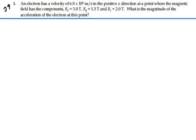Here's problem 29.1. An electron has a velocity of 6 times 10 to the 6 meters per second in the positive x direction, at a point where the magnetic field has the components B_x equal 3 tesla, B_y equal 1.5 tesla, and B_z equal 2 tesla. What is the magnitude of the acceleration of the electron at this point?